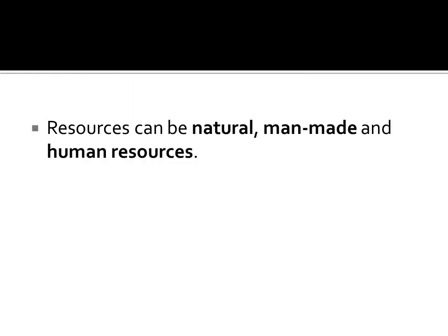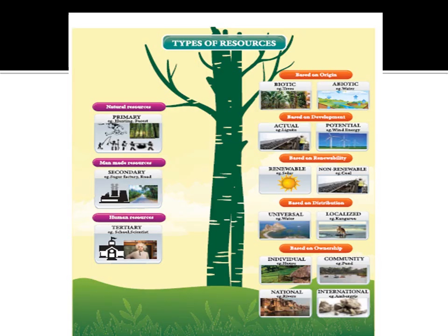Resources can be natural, man-made, and human resources. Natural resources are classified as primary; man-made as secondary; and human resources as tertiary. Based on origin: biotic and abiotic. Based on development: actual and potential. Based on renewability: renewable and non-renewable. Based on distribution: universal and localized. Based on ownership: individual, community, national, and international.